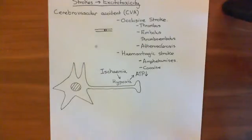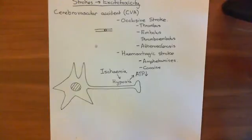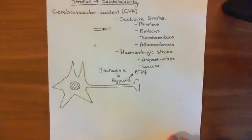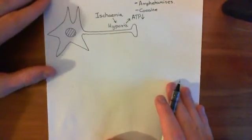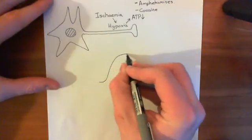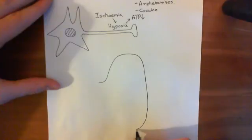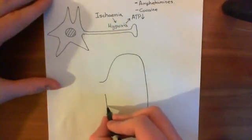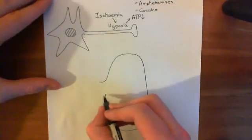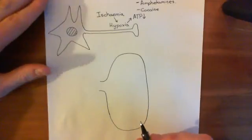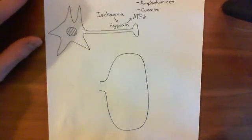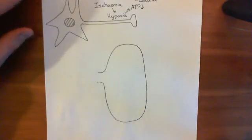Now, what does ATP levels going down cause in this neuron? Basically, it stops the sodium-potassium pump from working. It also stops the plasma membrane calcium ATPase from working. These are both going to have important effects in the axon terminal. To understand what's going to happen when the sodium-potassium ATPase stops working, you need a bit of revision about how resting membrane potential is maintained across cell membranes — but we'll do that in the next video.